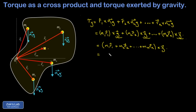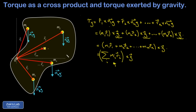Switching to summation notation, that expression in parentheses is the sum of all the mi·ri's crossed into the vector g pointing straight down. That sum is familiar — it's related to the center of mass formula. I'll post a link to the video where it was derived.